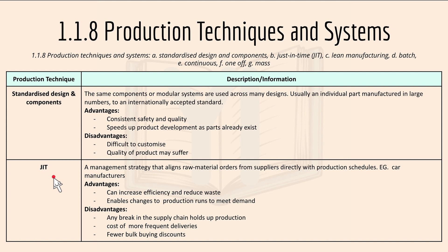Just-in-time (JIT) is a management strategy that aligns raw material orders from suppliers directly with the production schedule, like car manufacturers. Specifically, you only manufacture a product if someone orders it — just in time. An advantage is it can increase efficiency and reduce waste, and enables changes to the production run to meet demand. Disadvantages include any break in the supply chain halts production, and the cost of more frequent deliveries with fewer bulk-buy discounts.